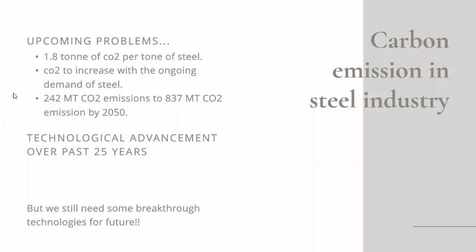The steel industry is facing many problems due to huge CO2 emissions. Around 1.8 tons of CO2 is produced per ton of steel, estimated to rise to 3.1 gigaton per annum by 2050. For India, as per its ongoing demand, it is estimated to rise three times by 2050 — from 242 million tons to 837 million tons. Technological advancements include increased energy efficiency, improved steel recycling rates, utilization of co-products, and extensive process automation for precise control of steelmaking. But breakthrough technologies are still needed for the future.